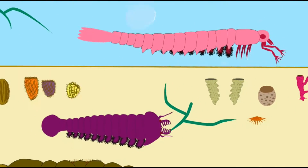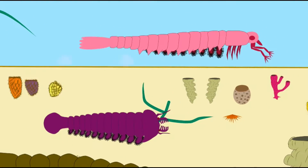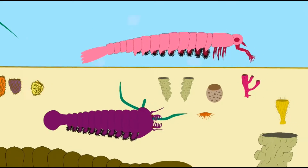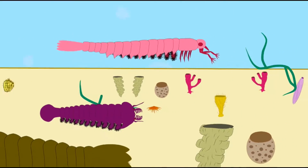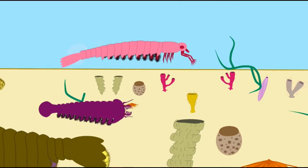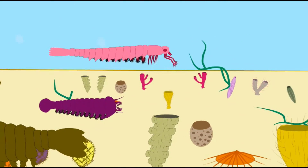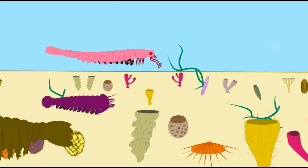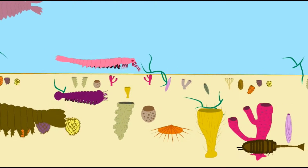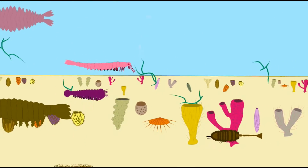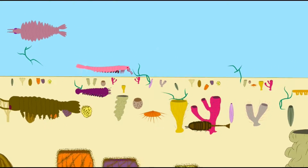The extinction of this group of Archaeocyathan sponges must have had a profound effect on marine ecosystems, given that they were a major component of early Cambrian reefs.